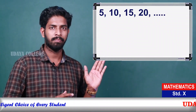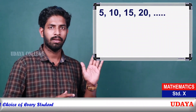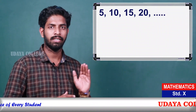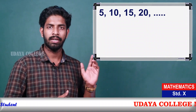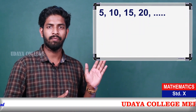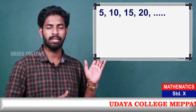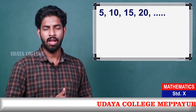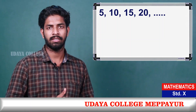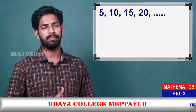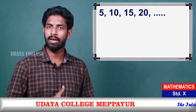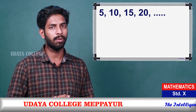5, 10, 15, 20. What is this? These numbers are multiples of 5.